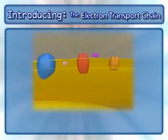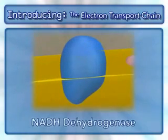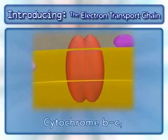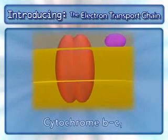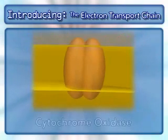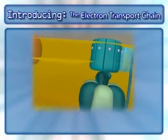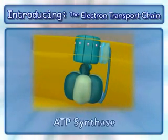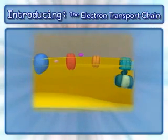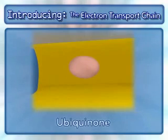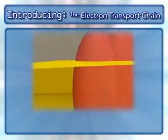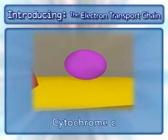The following complexes are found in the electron transport chain: NADH dehydrogenase, cytochrome BC1, cytochrome oxidase, and the complex that makes ATP — ATP synthase. In addition to these complexes, two mobile carriers are also involved: ubiquinone and cytochrome C.